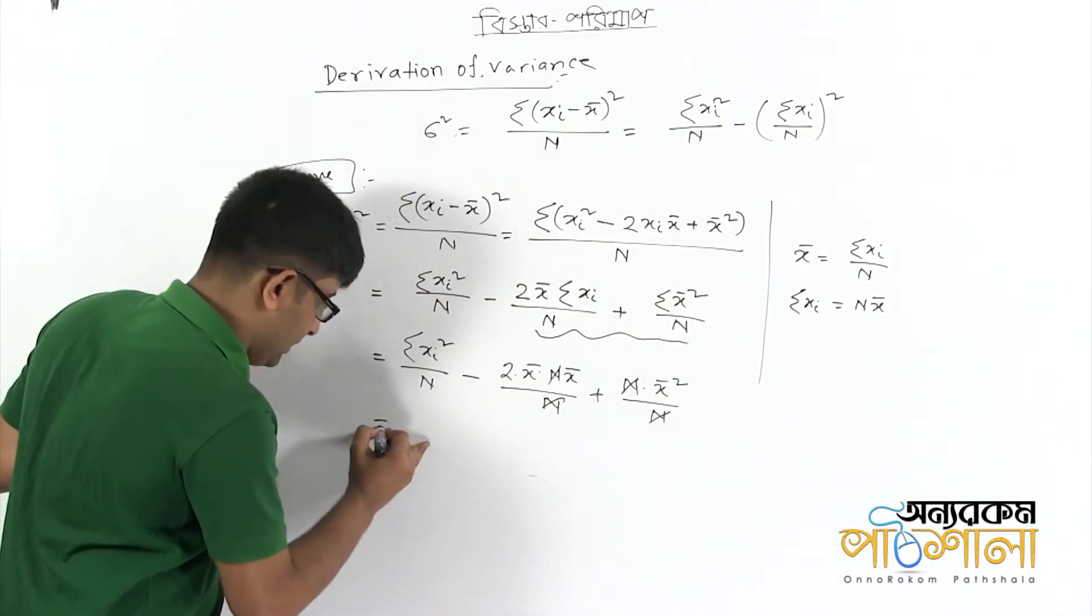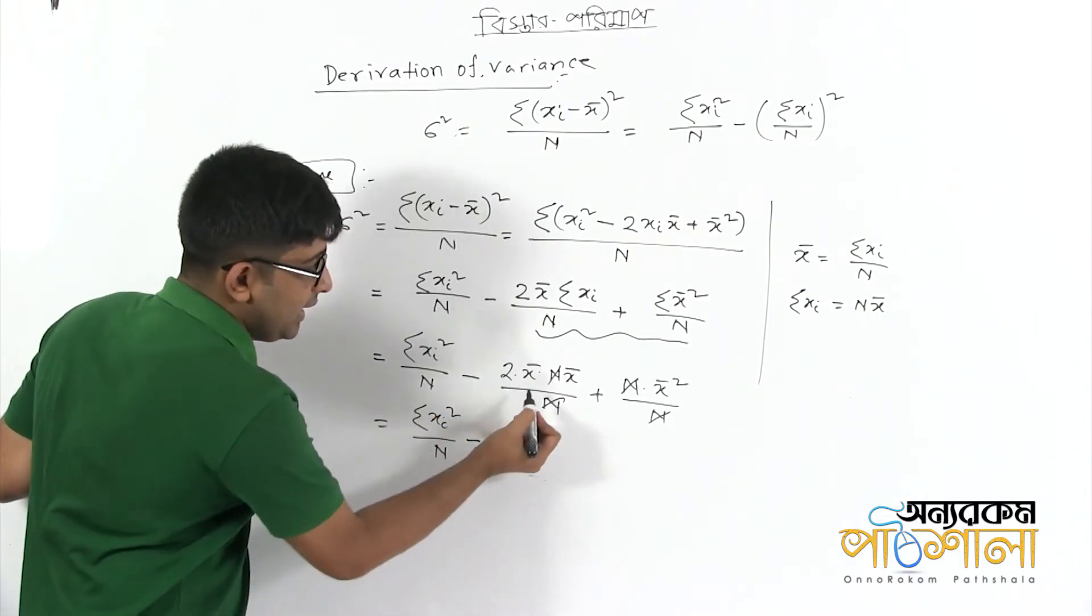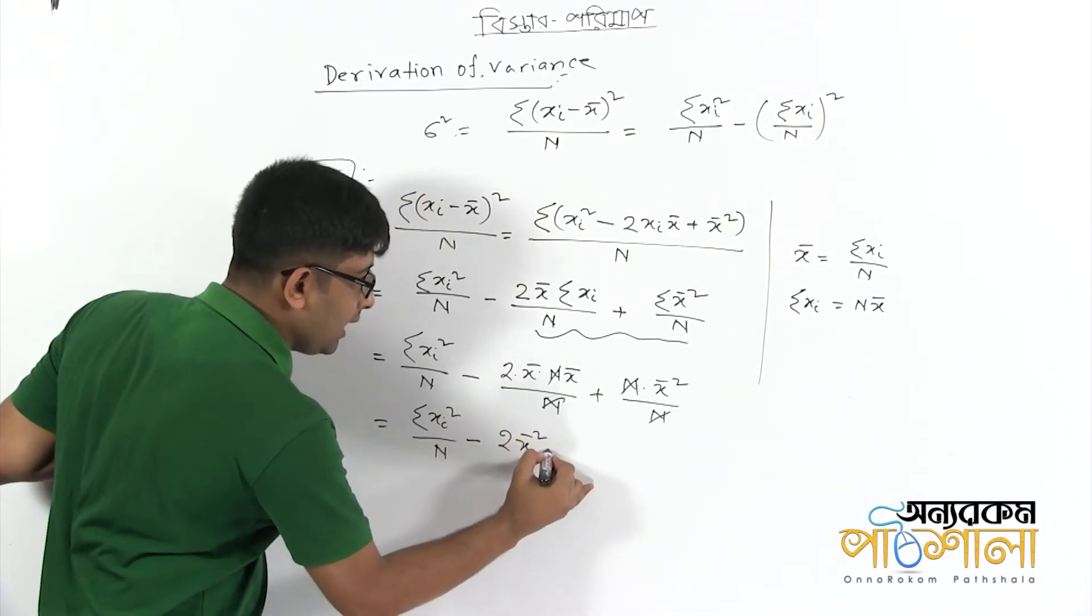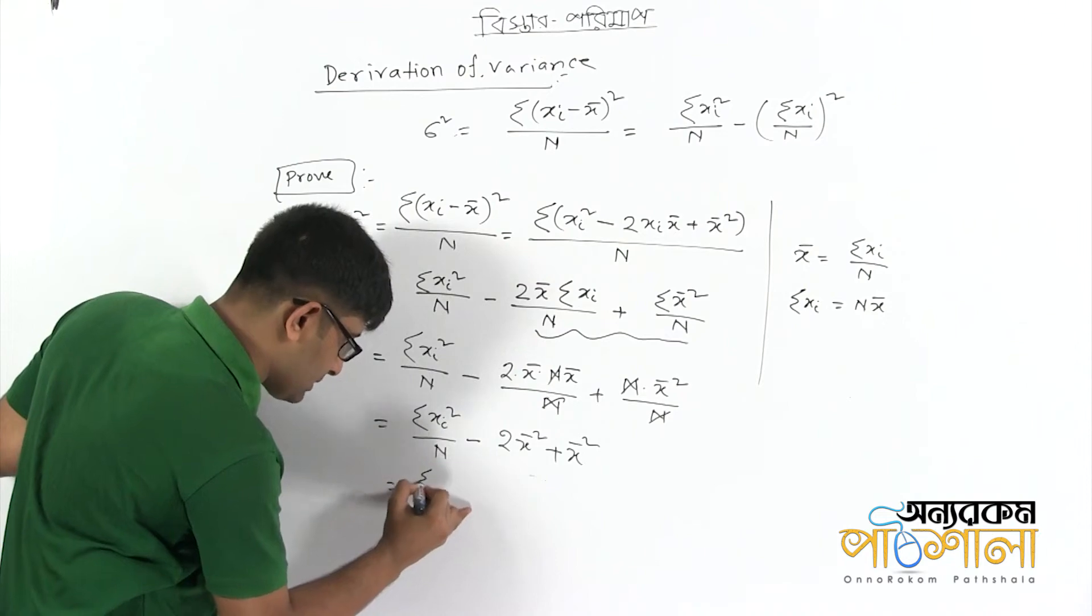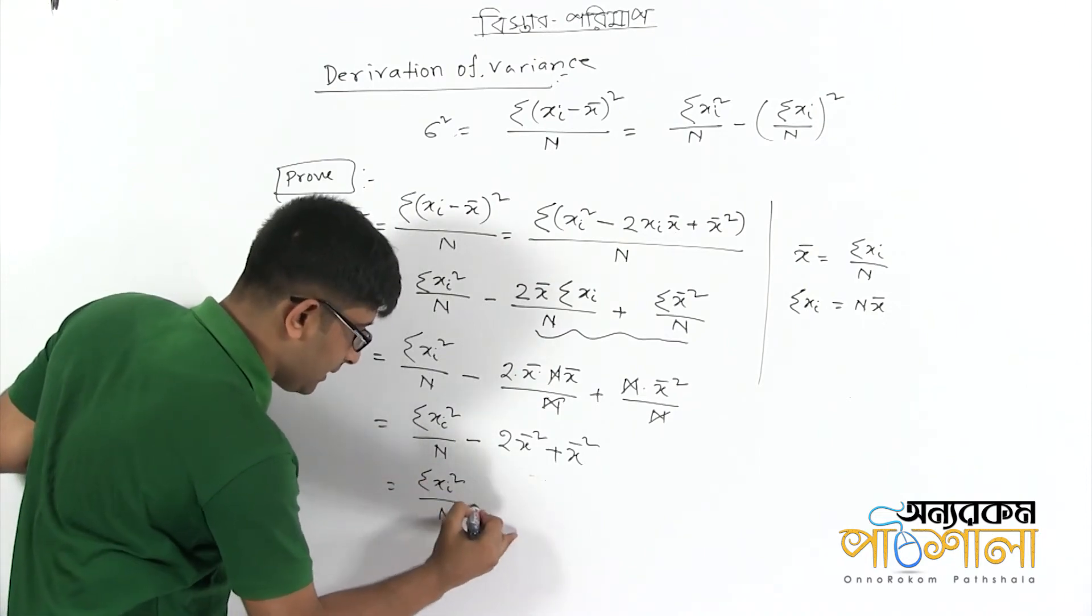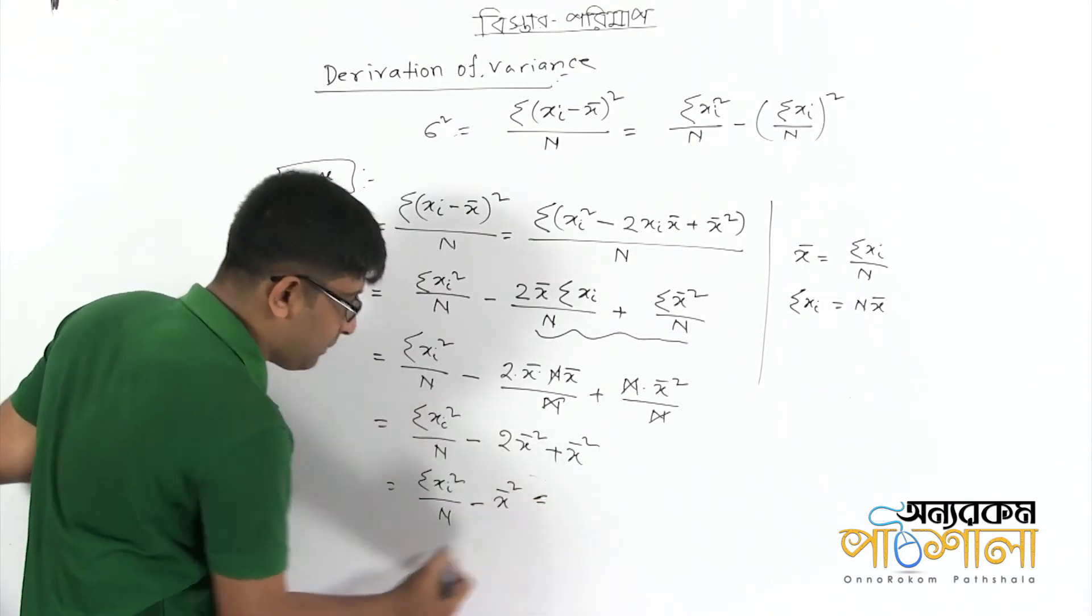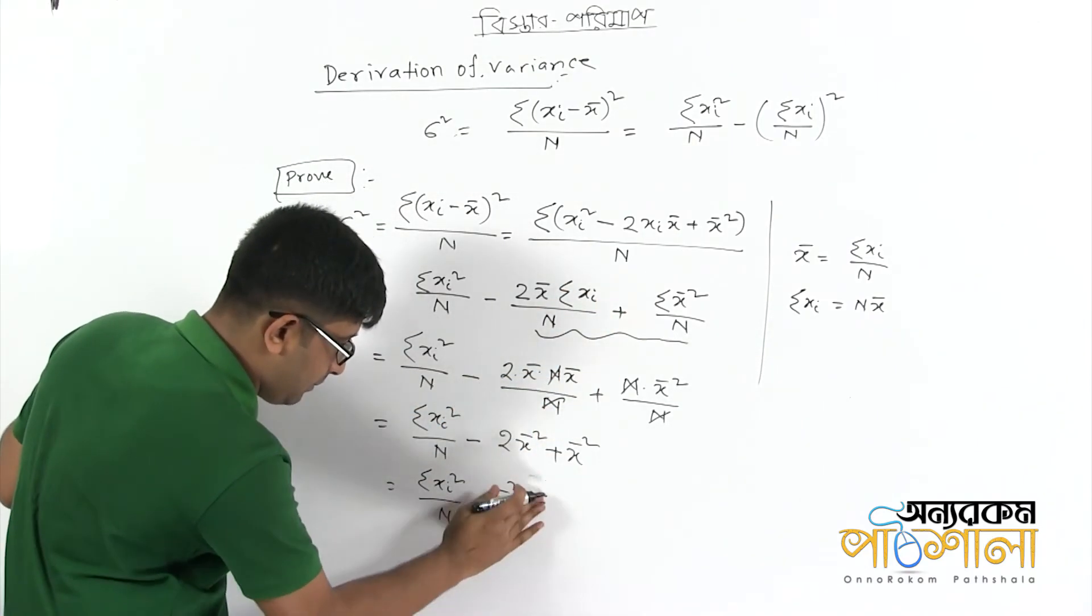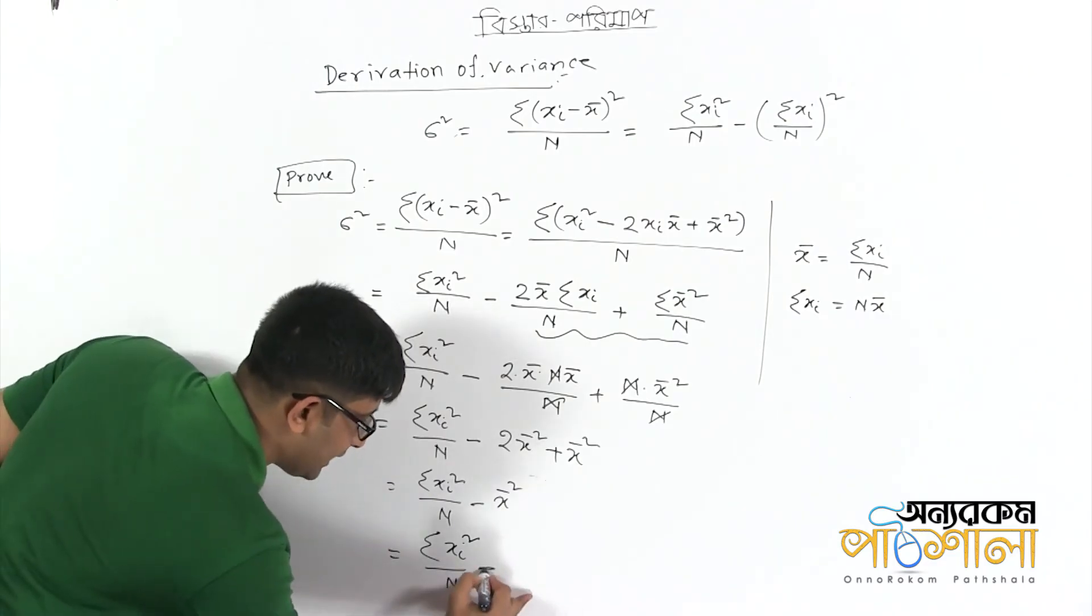What we have is summation of xi square divided by n minus 2x bar square plus x bar square. That means summation of xi square divided by n minus x bar square. This equals summation of xi divided by n minus x bar square.